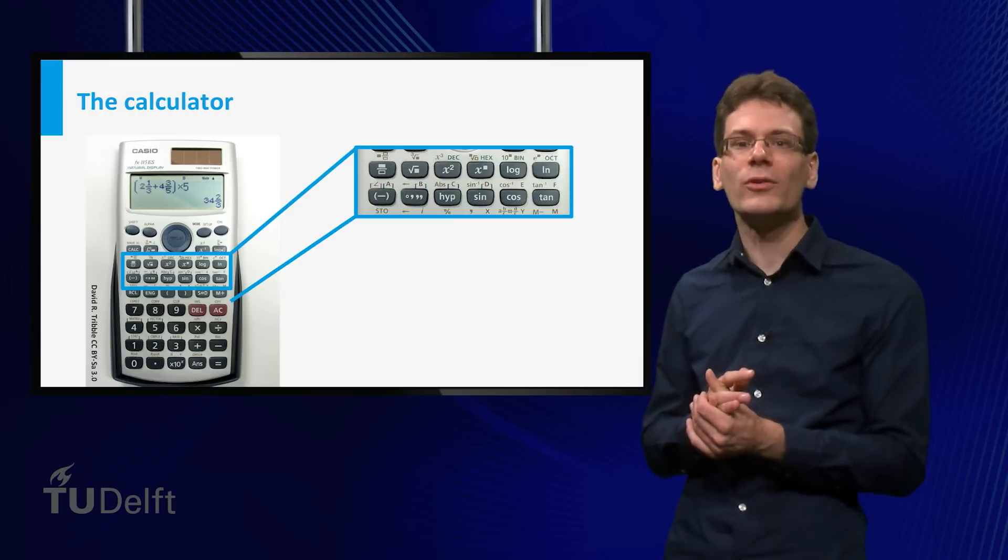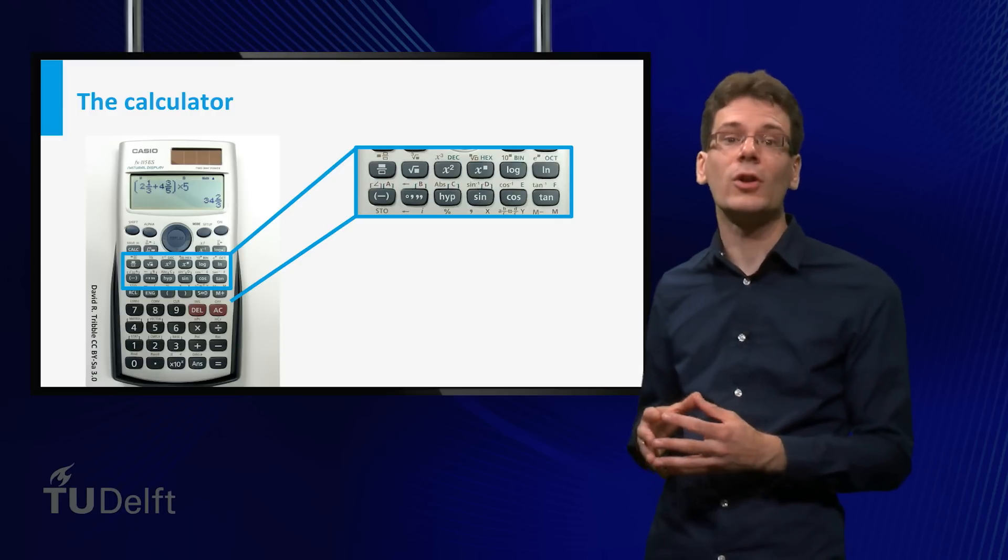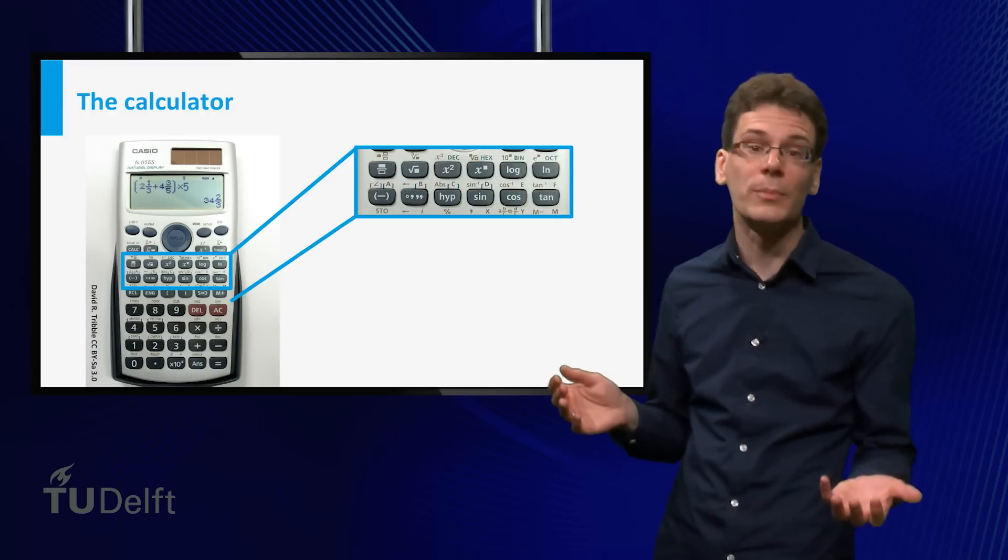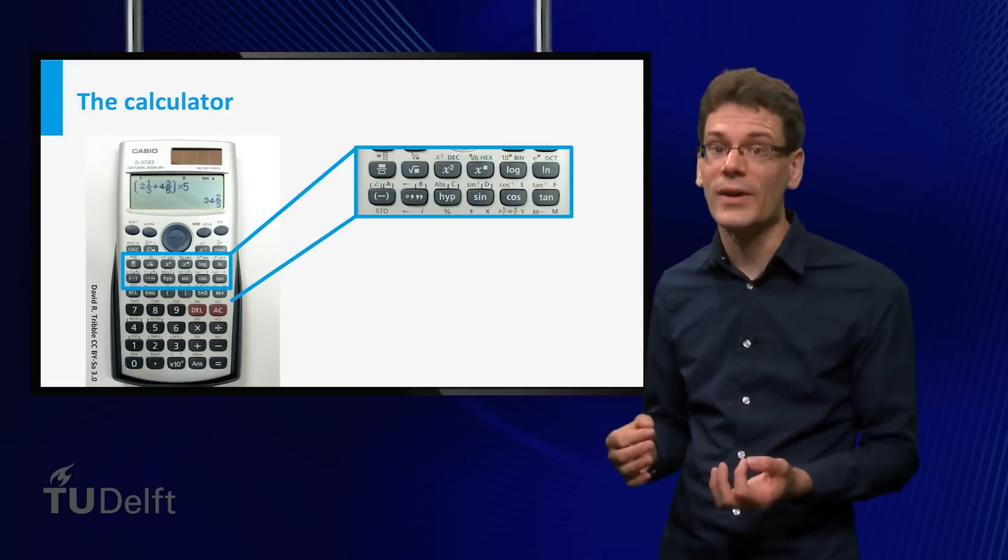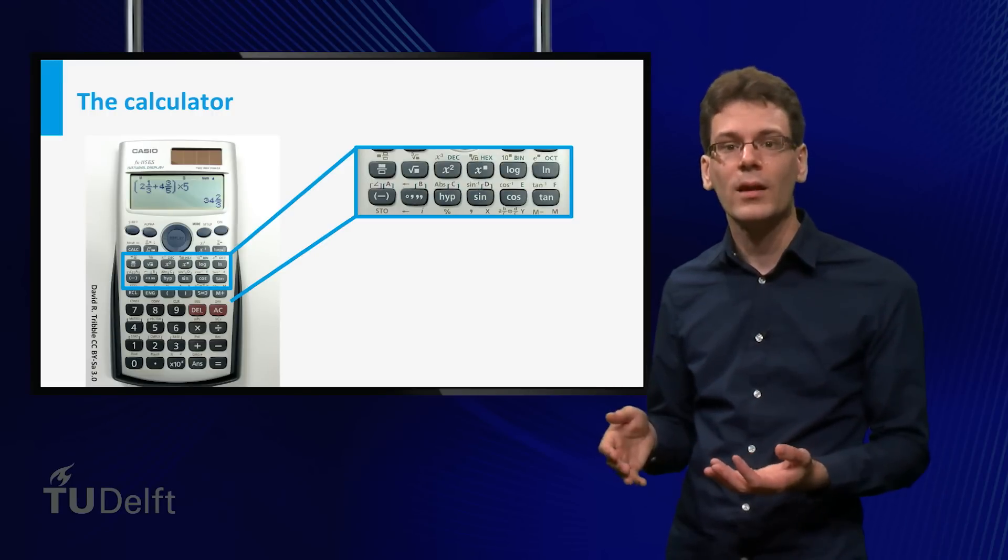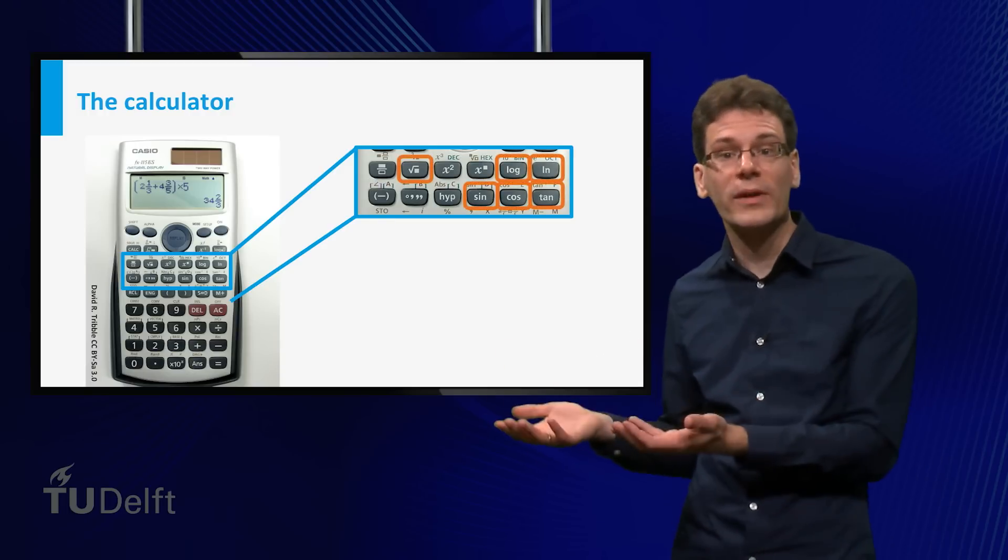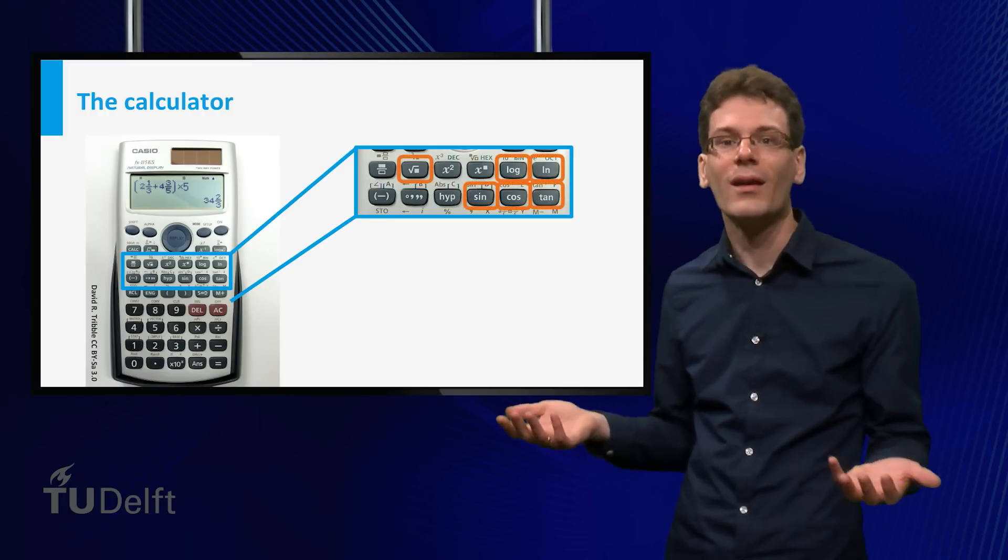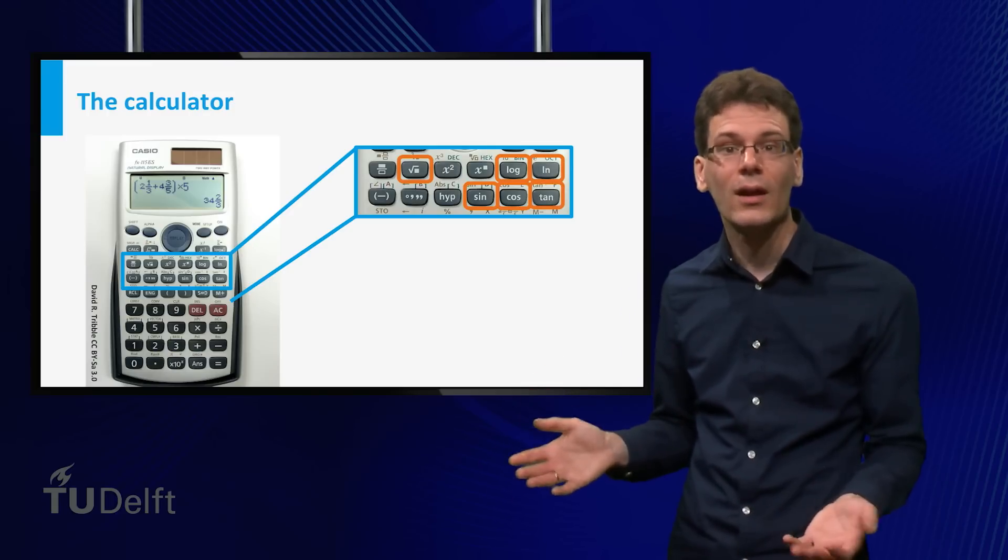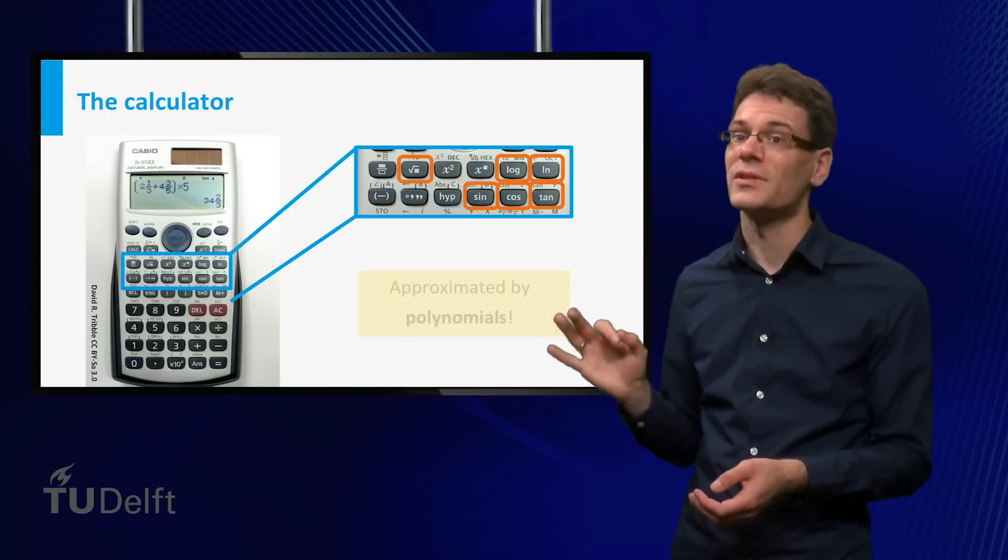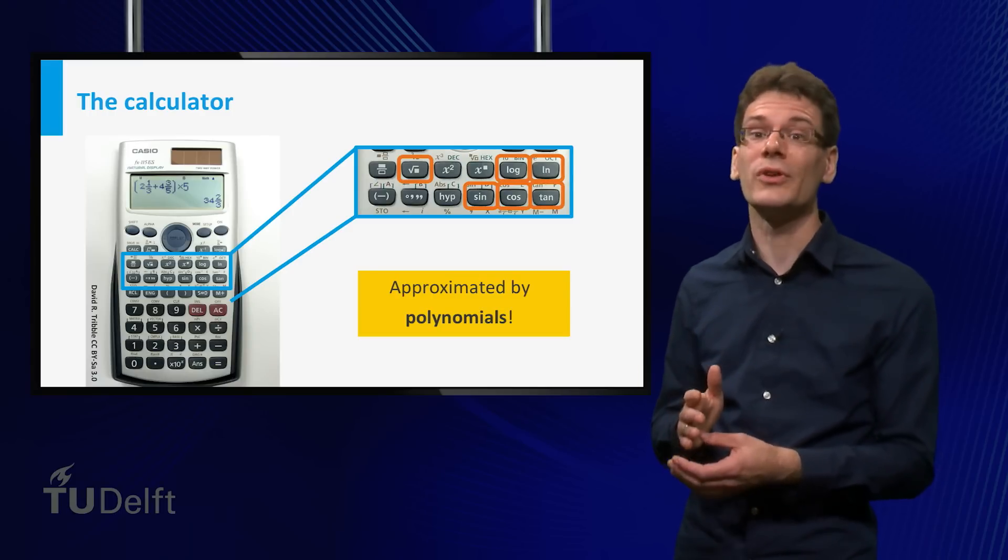Let me end with a final remark on the calculator that I started with. Given the basic mathematical operations that it can perform, addition and multiplication, it follows that a calculator is very good at evaluating polynomial functions. But most calculators can do much more. There are buttons for sine and cosine, logarithms, square roots, etc. How can a calculator evaluate those? And the answer is, it cannot. But using polynomials, these functions can be approximated. More about that in the university preview of this week.